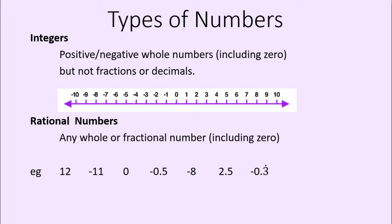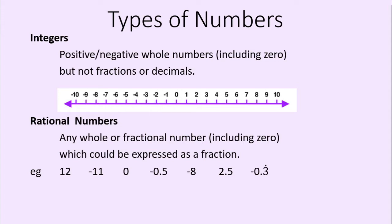Here are some examples of rational numbers. What makes these rational numbers is that they could all be expressed as a fraction. Now I know what you're thinking — these whole numbers, how do we write them as a fraction? Well, 12, for example, could be written as 12 over 1, because a fraction just means the top is being divided by the bottom, and 12 divided by 1 is 12.